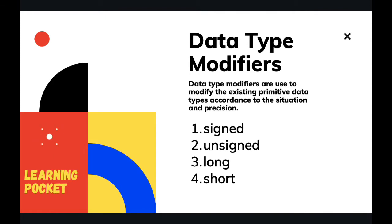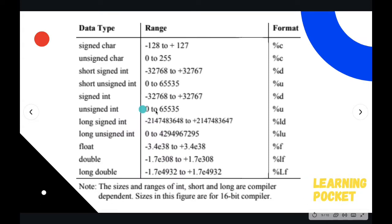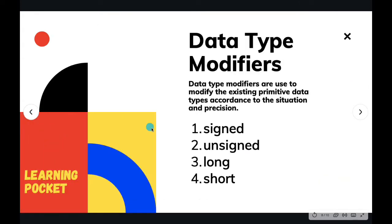There are some situations where we need to modify the existing types of data types. When I say existing type of data type, I mean the primitive data types, or you can say primary data types or fundamental data types. These three are the names that we give to the existing data types. What are the existing data types that we have?